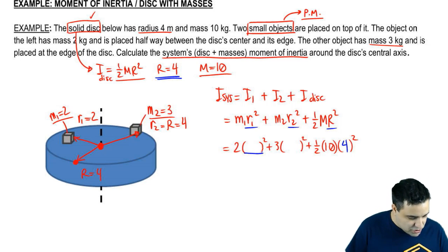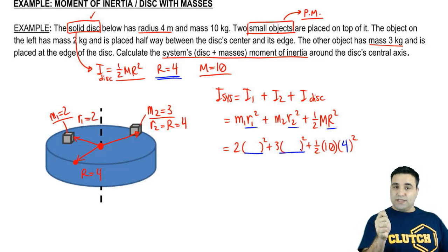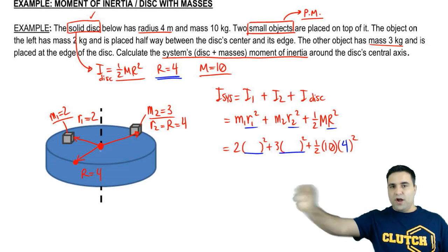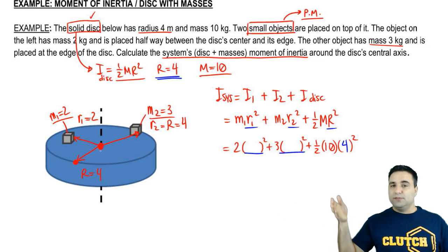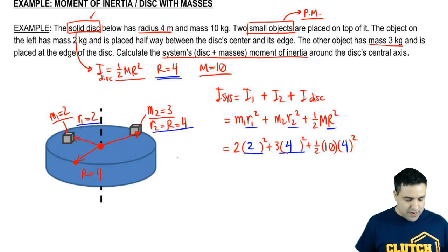Now, these R's we have to slow down for a little bit. These are the distances between the center, the axis of rotation, which is in the center, and where the object is. Little R is the distance between the object and the center. And we already had these figured out here. It's 2 and 4. So the 2 kilogram has a 2 meter distance, and the 3 kilogram has a 4 meter distance.